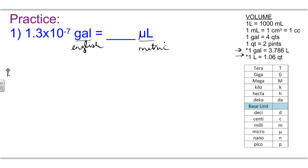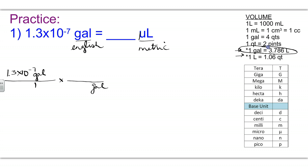We'll start by taking our given 1.3×10⁻⁷ gallons and putting it all over 1. Times, draw a line, bring down gallons, and now we're going to use a conversion factor. Gallons happens to be one of our units that we can convert to the metric system with, and conveniently we can go straight from gallons to liters. The conversion is 1 gallon equals 3.786 liters. I'm now at liters because gallons have canceled.